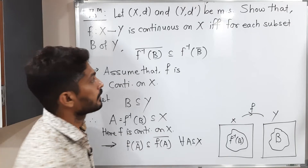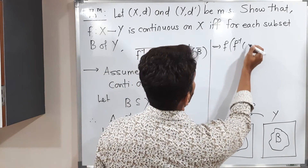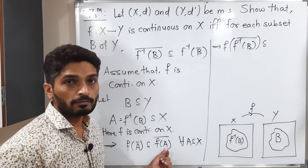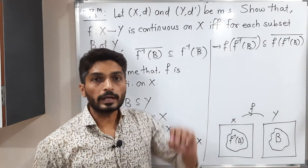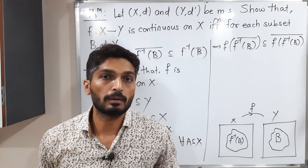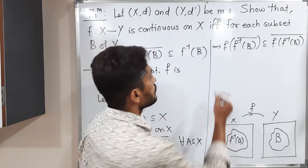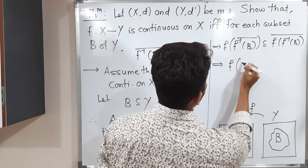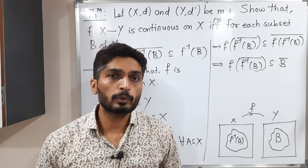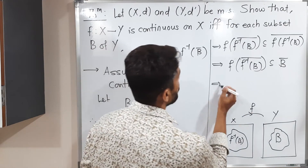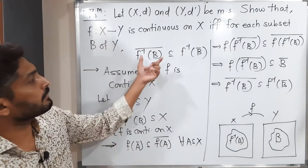Let us substitute the value of A. Putting A = f inverse of B, we get: f(f⁻¹(B)-bar) ⊆ f(f⁻¹(B))-bar. On the left side, f and f inverse cannot cancel because f inverse has the bar. But on the right side, f and f inverse both come under the same bar, so they cancel each other. Therefore we get f⁻¹(B) ⊆ B-bar. Shifting f to the other side gives f⁻¹(B)-bar ⊆ f⁻¹(B-bar), which is exactly what we needed to prove.